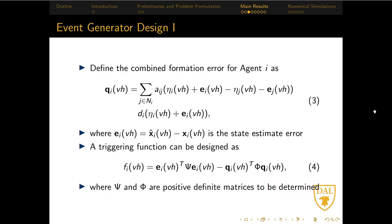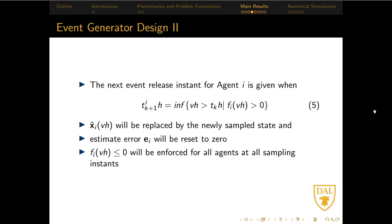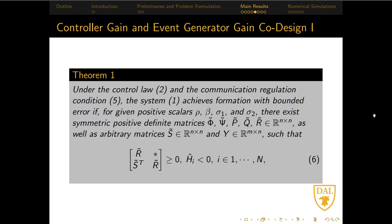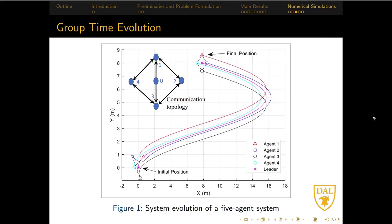In the event generator design, we first propose a combined formation error signal in equation 3. A quadratic triggering function can then be designed as equation 4, where psi and phi are two positive definite matrices to be designed. And the triggering rule is then designed as shown in equation 5. Under this triggering rule, the triggering function will remain negative semidefinite for all agents at all sampling instances. The following theorem gives the sufficient conditions for the controller and the event generator gain design. Basically, the controller and the event generator gain design problem is formulated as a feasibility problem of the LMI 6.